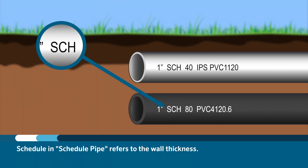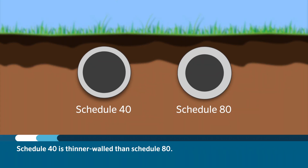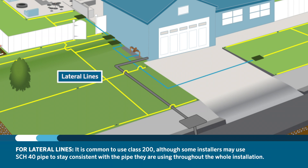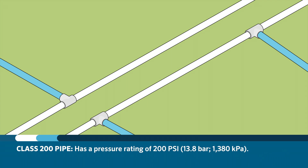The schedule in schedule pipe refers to the wall thickness of the pipe. Schedule 40 is thinner walled than schedule 80. In schedule 40 pipe, the wall thickness remains constant in all pipe sizes. For lateral lines, it's common practice to use class 200, although some installers may prefer to use schedule 40 pipe to stay consistent throughout the whole installation. Class 200 pipe at any size has a pressure rating of 200 psi.